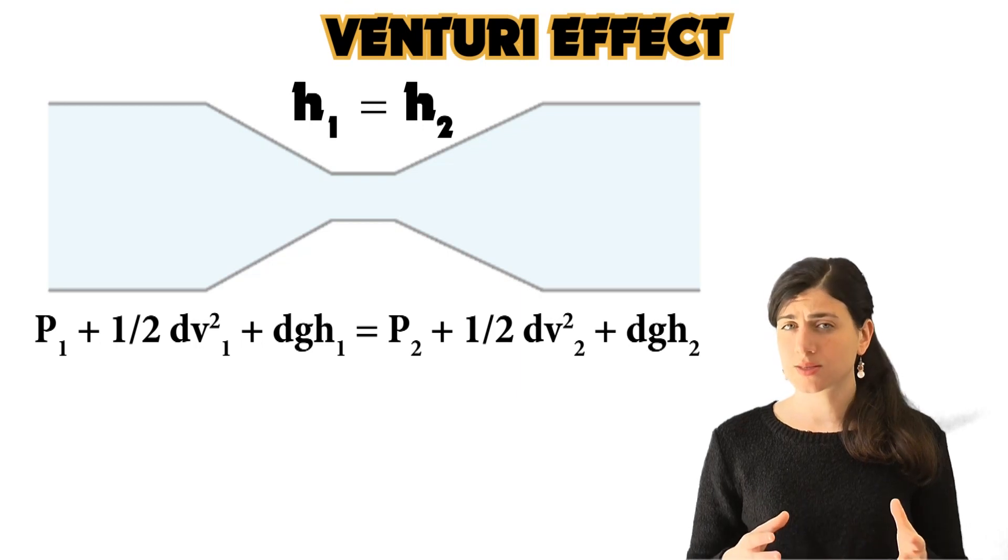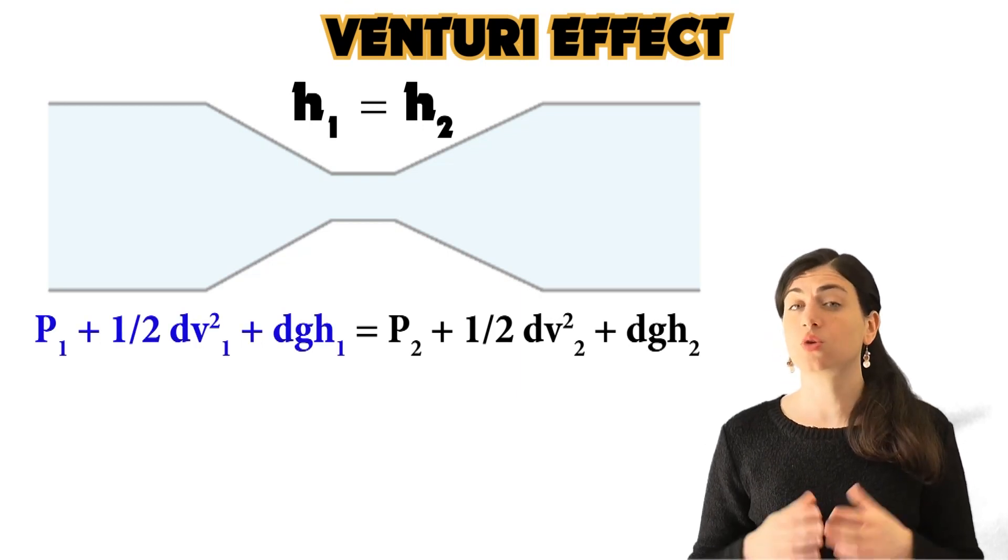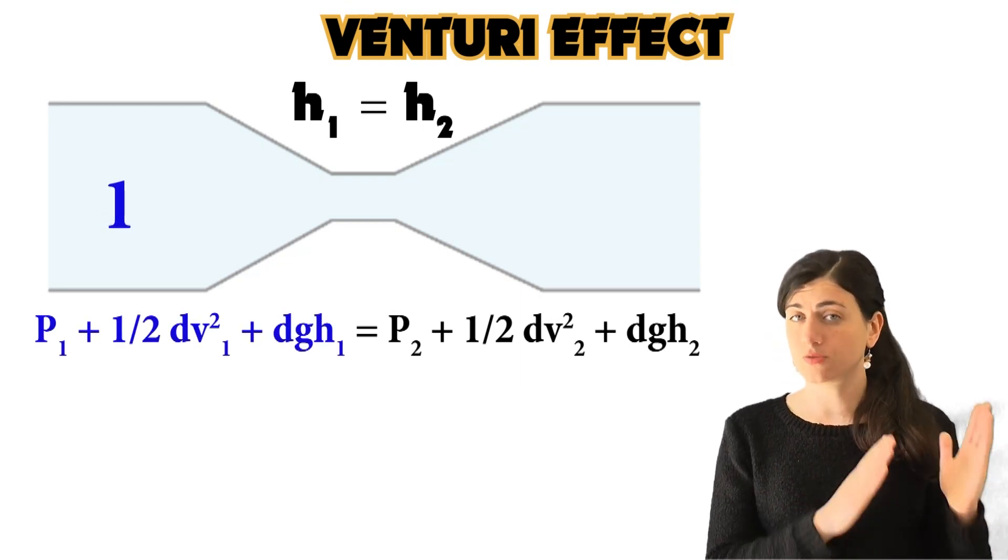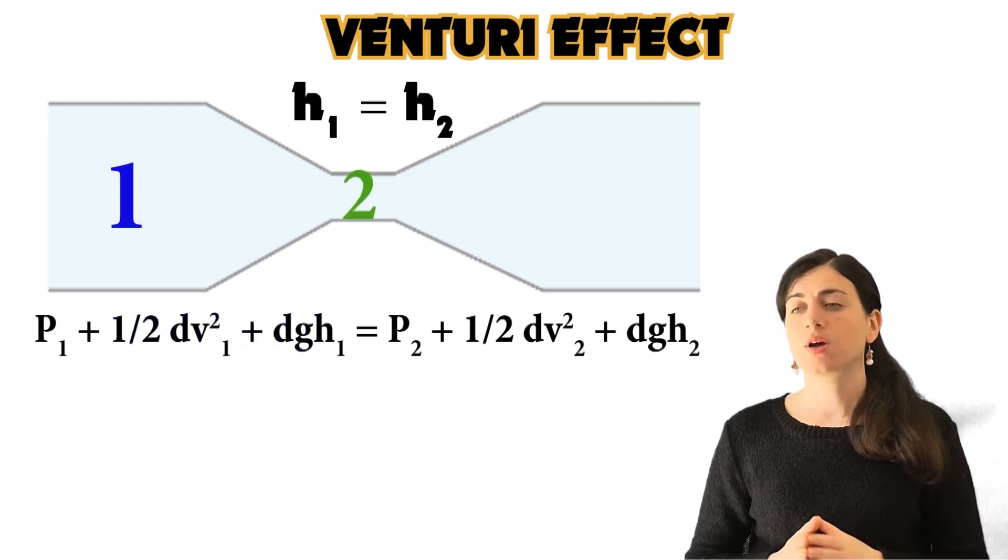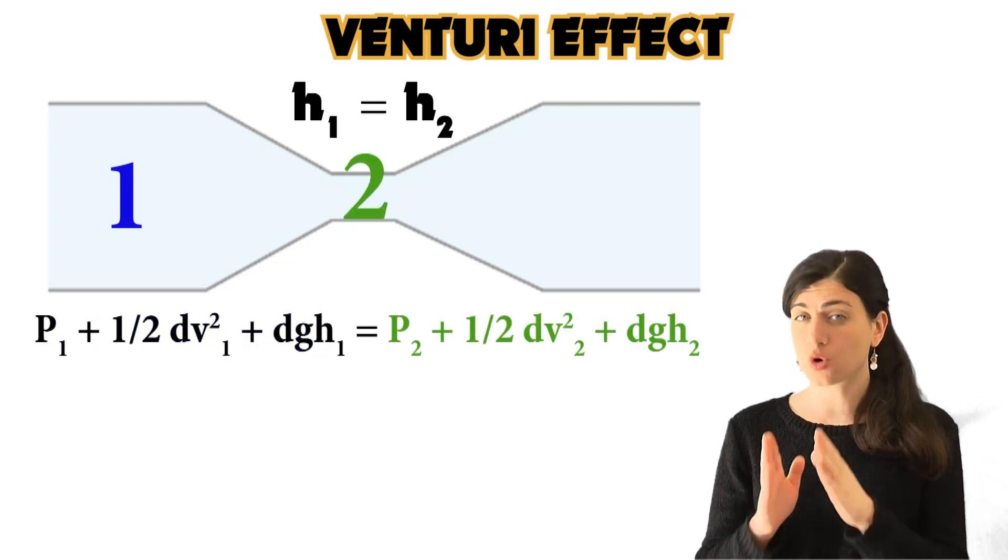In this equation the number 1 stands for the conditions at the entrance of the tube, whereas number 2 stands for the conditions in the narrowing.